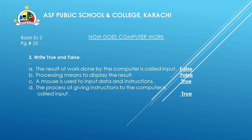Here we have our book exercise on page number 25, exercise number 2, which is true or false. Number 1: The result of work done by the computer is called input — this is false. Number 2: Processing means to display the result — false. Number 3: A mouse is used to input data and instructions — true. Number 4: The process of giving instructions to the computer is called input — true.